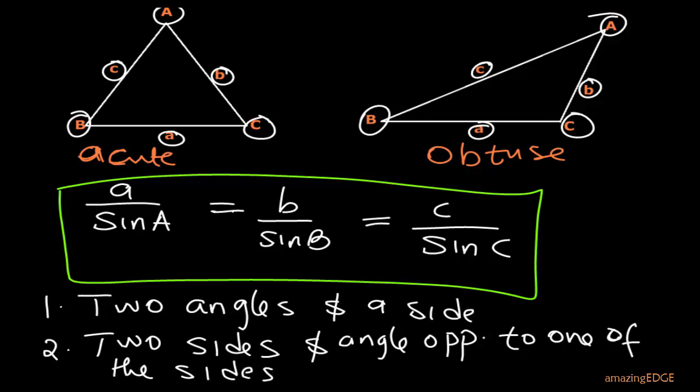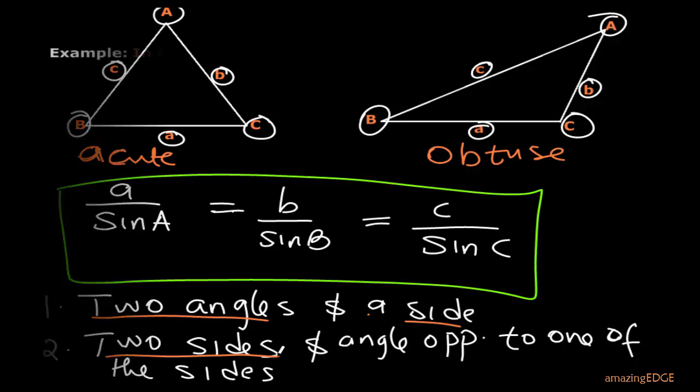If you are given two angles and one side, you can find any of the remaining two sides using the sine rule. Or if you are given two sides and the angle opposite to one of them, you can also use the sine rule to find the remaining sides or the remaining angle. In subsequent videos we will look at examples of how to apply the sine rule.